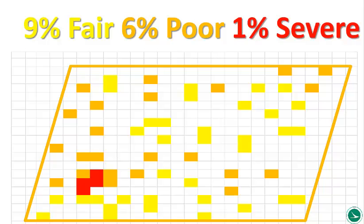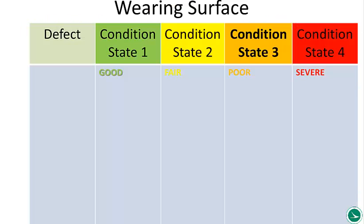Inspectors within SMS are able to code either the quantity in square footage or the quantity in percentage. You can toggle back and forth between the two, depending on whichever is easier to quantify.